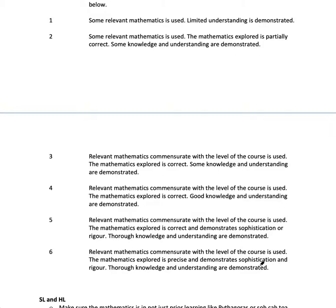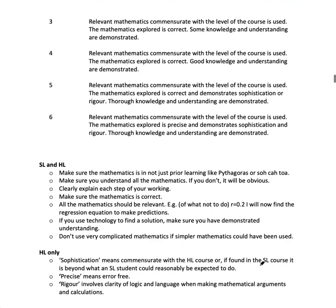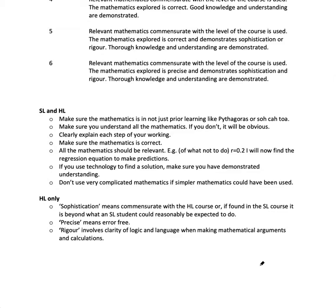Very hard to get to 6 for an HL IA, but I've seen it done many a time. So let me just go through these points. First one, make sure the mathematics is not just prior learning like Pythagoras or SOHCAHTOA. I've mentioned that already. Make sure you understand all of the mathematics. If you don't, it will be obvious.